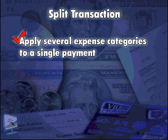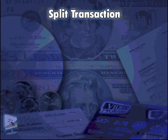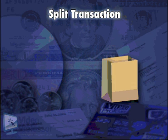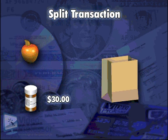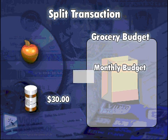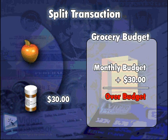The Split Transaction window allows us to apply several expense categories to a single payment. This can be useful if, for instance, we buy non-food items like healthcare products along with our groceries. We may have a $30 prescription filled and need to have the ability to enter it as a separate category, so it won't skew our monthly budget for groceries.